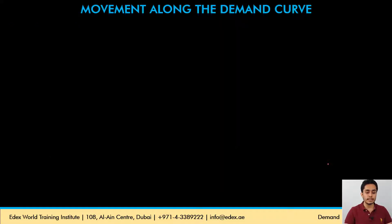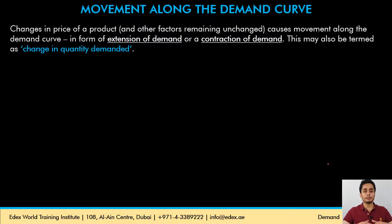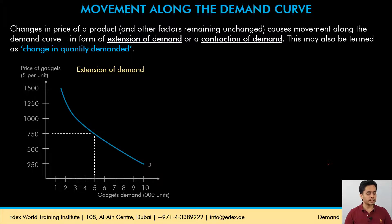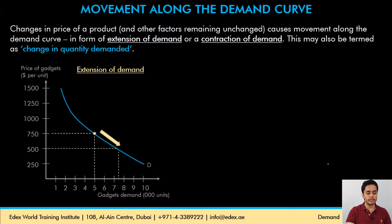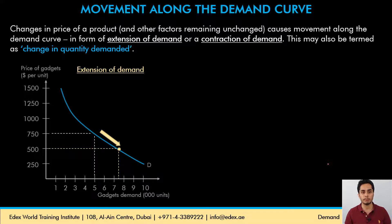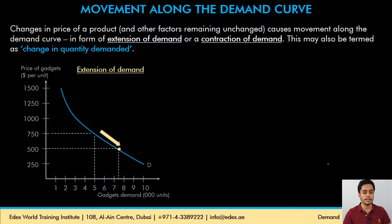Related to the law of demand, we also have movement along the demand curve. When the price of a product changes, the quantity demanded changes — this is either extension or contraction of demand. Extension of demand: if consumers are currently buying 5000 gadgets per year at $750, and the price falls to $500, they now consume 7500 gadgets per year. This movement from 5000 to 7500 is extension of demand — as price falls, quantity demanded rises — assuming all other factors are constant.